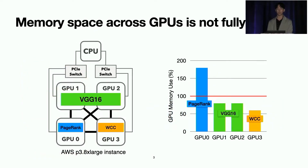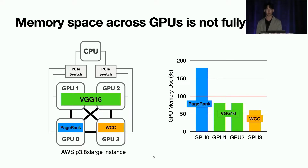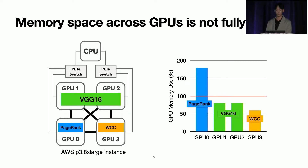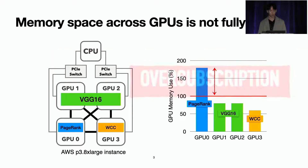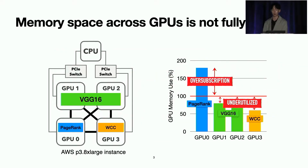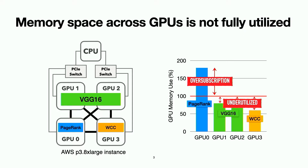However, in such a shared multi-GPU environment, memory space across GPUs is not fully utilized. We observed that a small amount of memory space across GPUs remains idle. The figure on the left is a topology of an AWS multi-GPU instance hosting multiple memory-intensive workloads. PageRank running on GPU 0 over-subscribes GPU memory and uses host memory as a swap device. The memory consumption of graph analytics depends on the input graph size, so it highly tends to over-subscribe GPU memory with large input graph sizes.